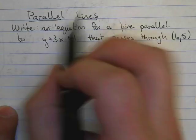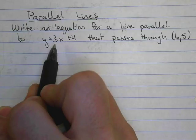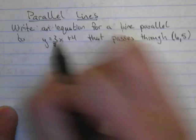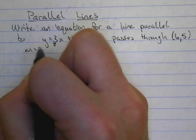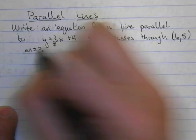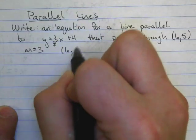So the first thing we want to identify is the slope of the line that we're trying to be parallel to, and the slope is 3. So I know my m is 3, and I know I want to pass through the point 6 comma 5.